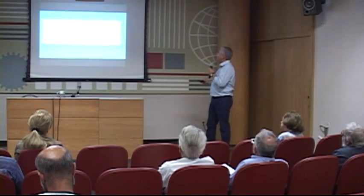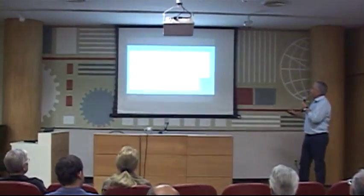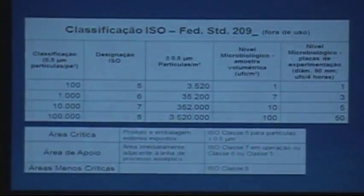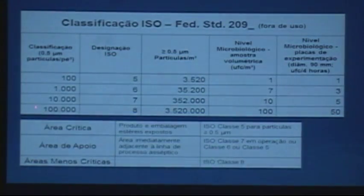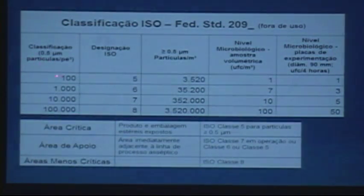Let's see if there's another comparison slide here. This comparison — class 100, 1000, 10,000, and 100,000 — was in use for many years. I have 31 years of cleanroom experience and for about 25 years I was speaking in terms of 100, 1000, 10,000, 100,000. This classification is from the Federal Standard 209 — the last version I used was 209E, and I also worked a lot with 209C.